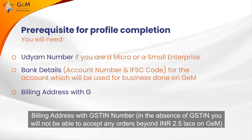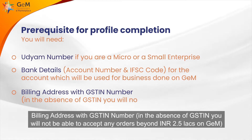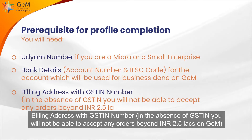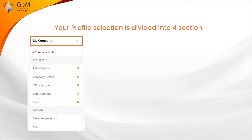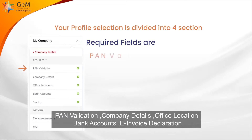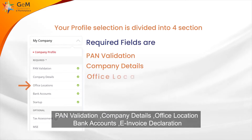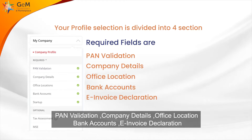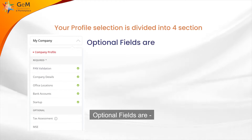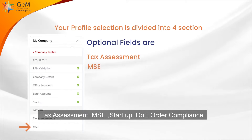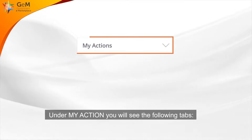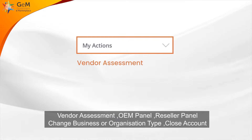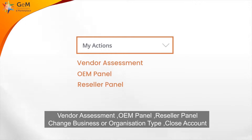Provide your billing address with GSTIN number. In the absence of GSTIN, you will not be able to accept any orders beyond INR 2.5 lakhs on GeM. Your profile section is divided into four sections. Under My Company, required fields are: PAN validation, company details, office location, bank accounts, and e-invoice declaration. Optional fields are: tax assessment, MSE, startup, and DOE order compliance.